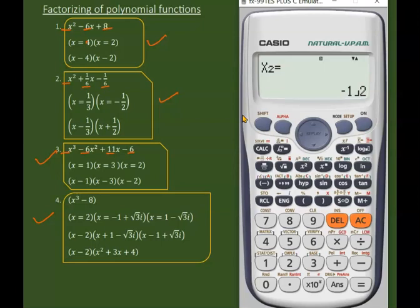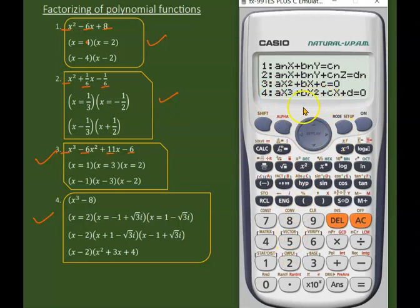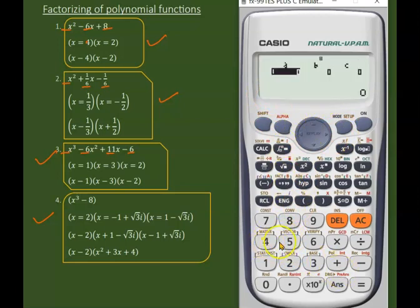Now let's go for the cubic expressions. We need to take the equation mode which is cubic. For this example, a value is one, b value is negative six, c value is 11, and d value is negative six. Enter. We will get three x values: x₁ equals one, x₂ equals three, then x₃ equals two.